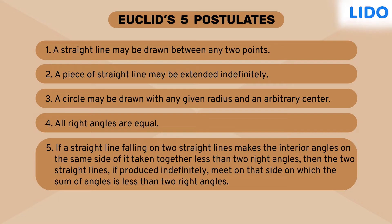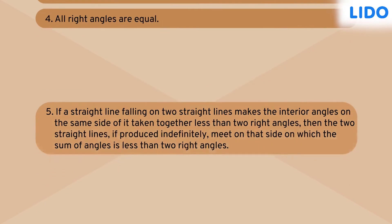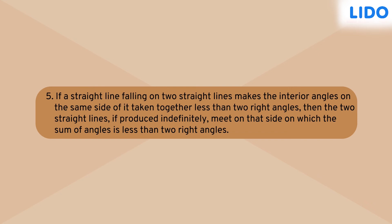In this video we will understand Euclid's fifth postulate and draw inference from it. In the fifth postulate, Euclid states if a straight line falling on two straight lines makes the interior angles on the same side of it taken together less than two right angles, then the two straight lines if produced indefinitely meet on that side on which the sum of angles is less than two right angles.